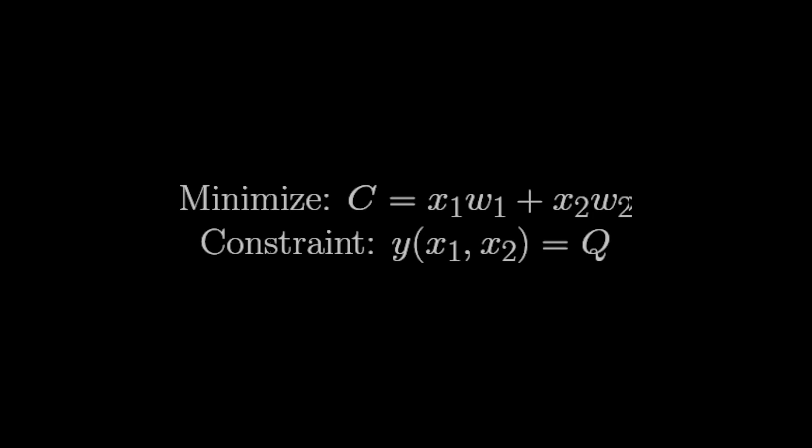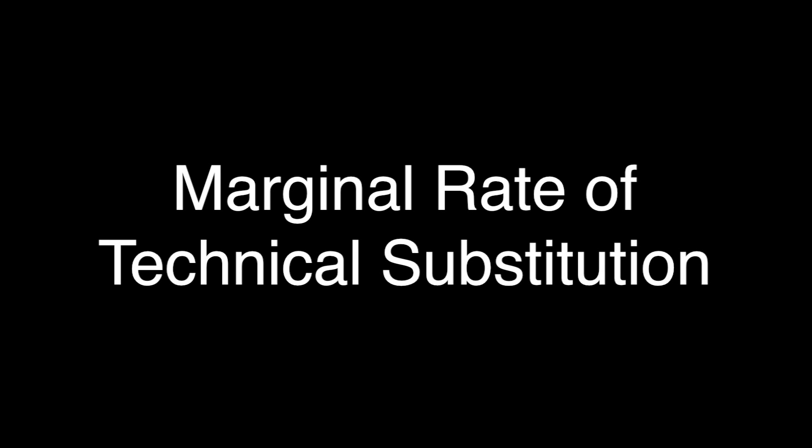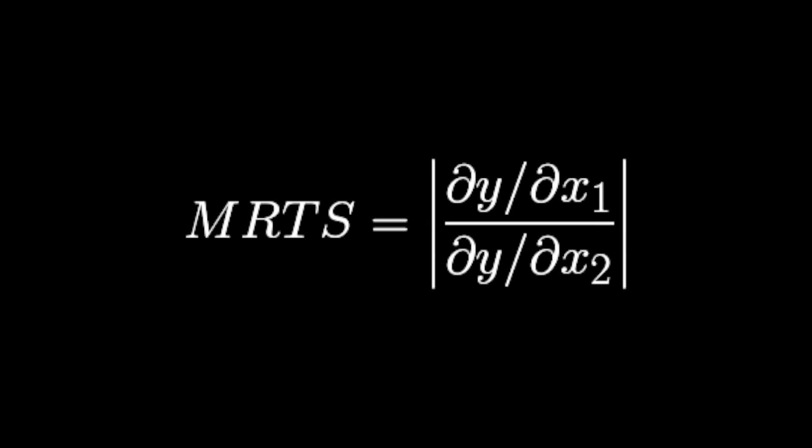To help in this calculation, we define a number, the marginal rate of technical substitution, or MRTS for short, to be the absolute value of the partial derivative of y with respect to x1 divided by the partial derivative of y with respect to x2. This value represents the number of units of input x2 that we need to buy in order to replace one lost unit of x1 and be able to produce the same amount.